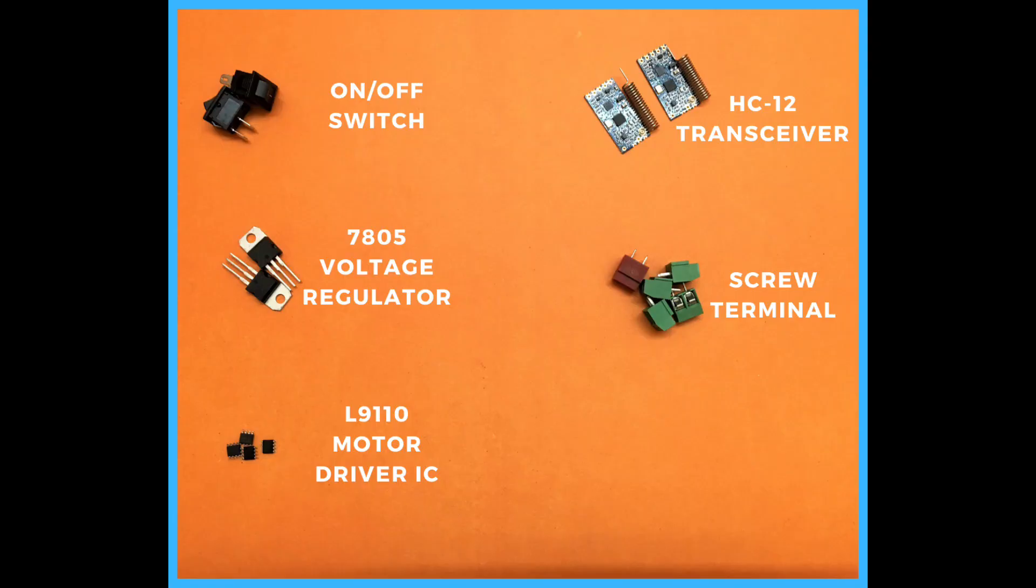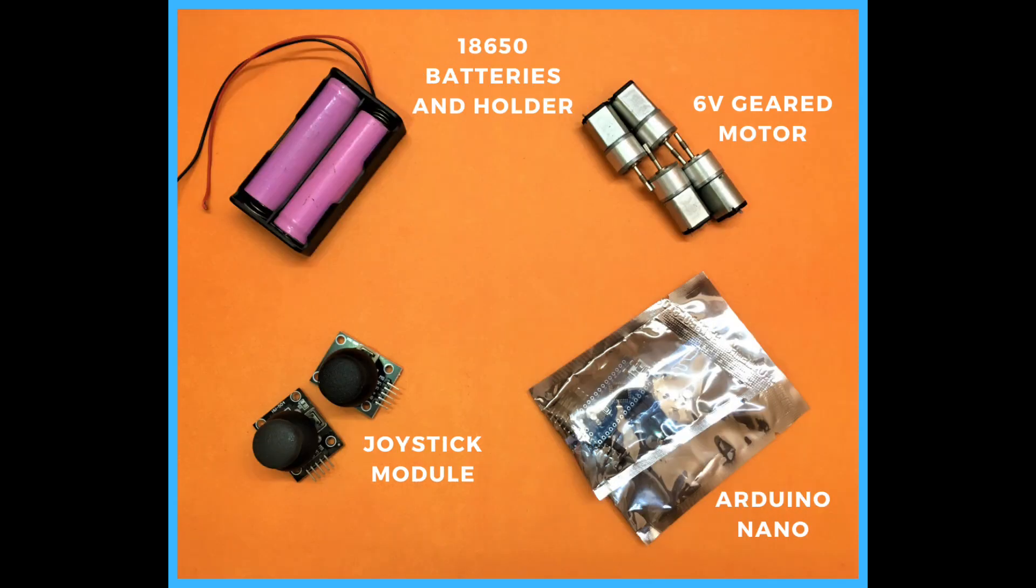The components required for this project are an on-off switch, 7805 voltage regulator, L9000 motor driver IC, HC12 as a transceiver, some screw terminals, 18650 battery and its holder, and joystick modules.